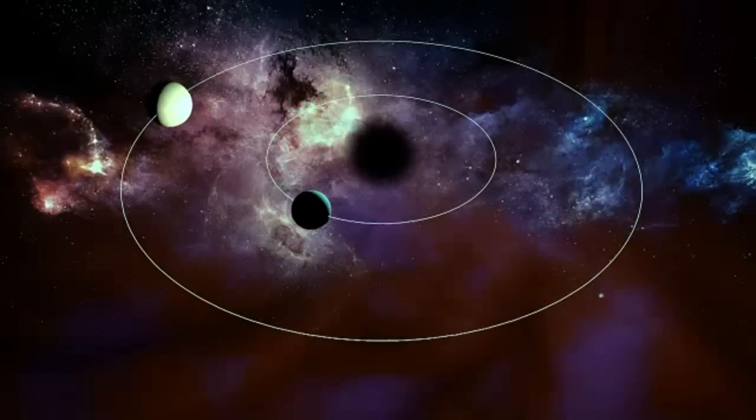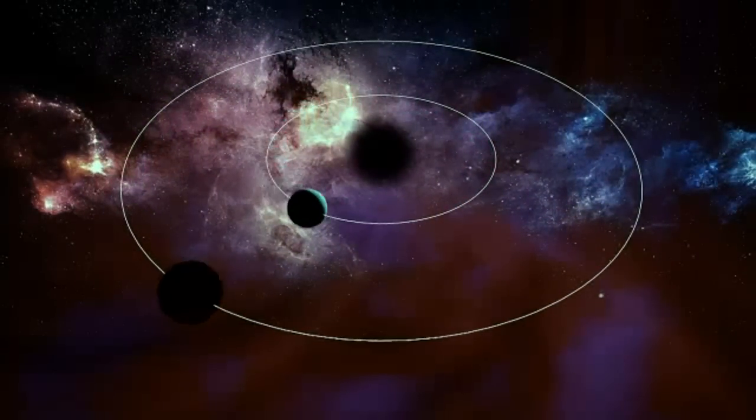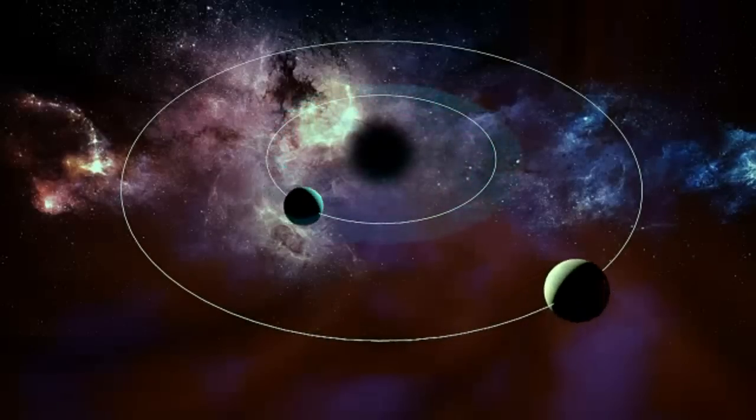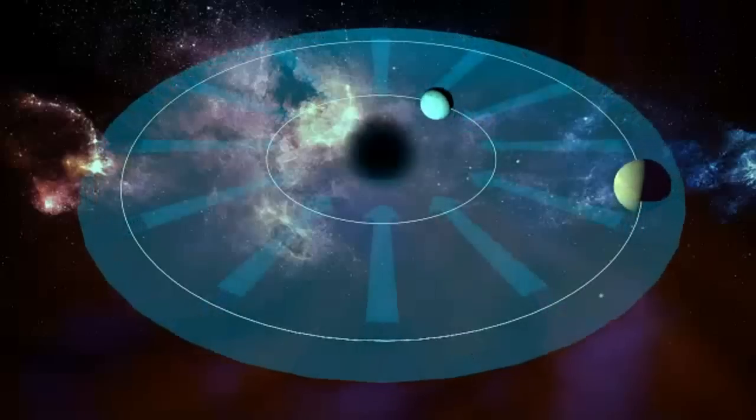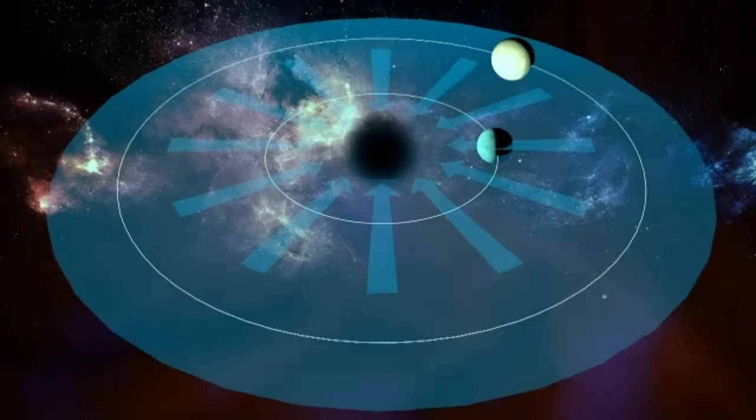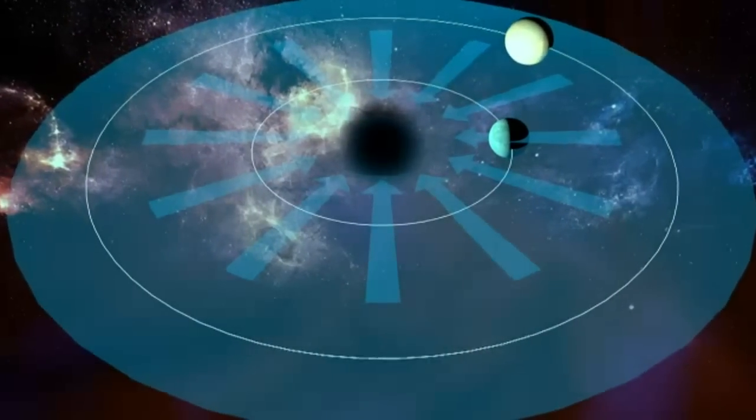But in other galaxies, scientists saw the opposite. Planets closer to the centre moved faster than ones on the edge. That's only possible, scientists say, if there's some hidden weight or mass which pulls those planets towards the centre, no matter how fast they spin. That hidden mass is dark matter.